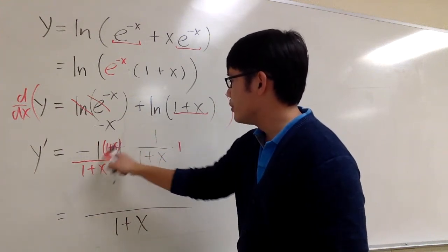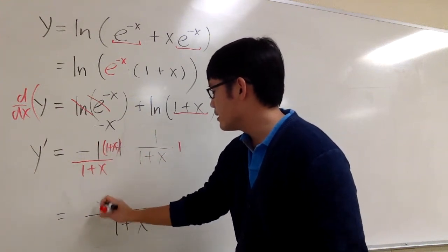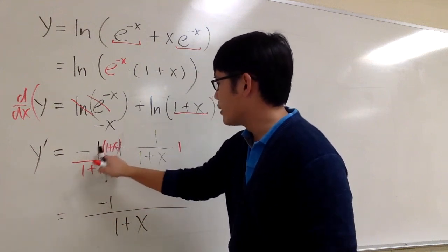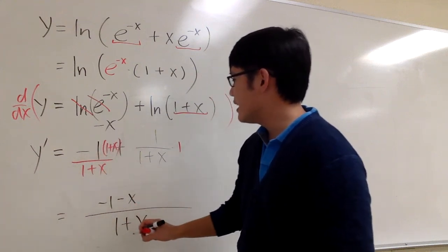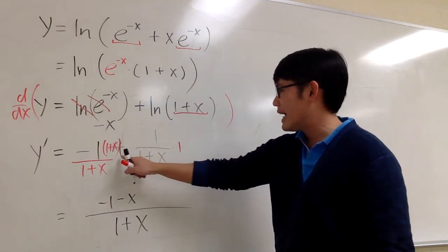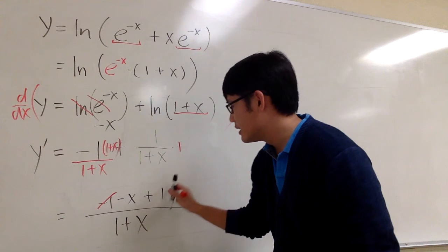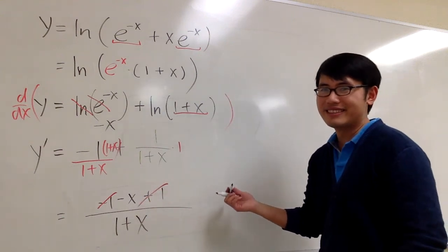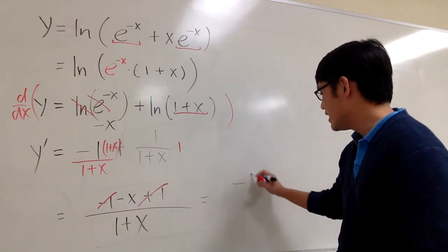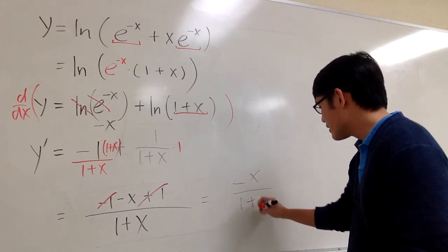This part you distribute. Negative 1 times 1 is negative 1. Negative 1 times x is negative x. And then here you are adding the 1, so plus 1. Of course, this and that cancel each other out. Final answer, negative x over 1 plus x.